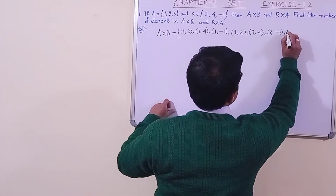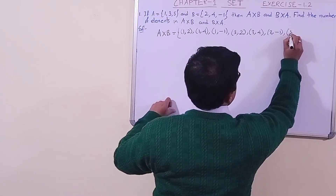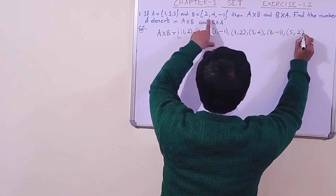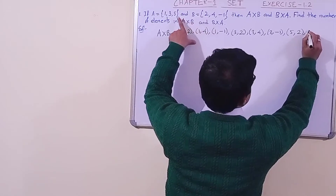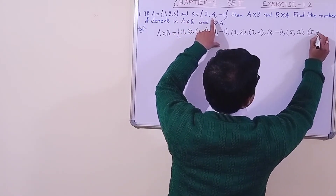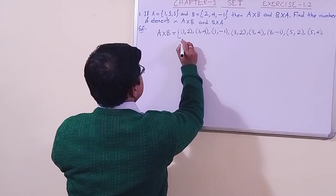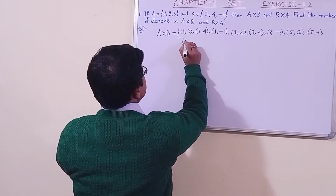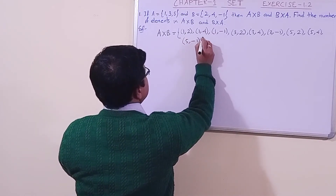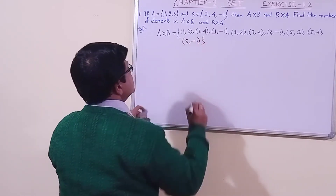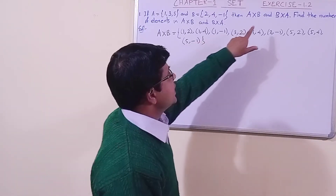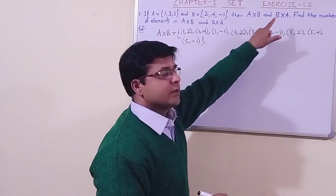Now element 5 is left. Five is connected with 2 first, then 5 is connected with 4, and one pair is left: 5 and minus 1. In this way we have found A cross B. Similarly, let us find B cross A.